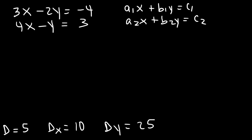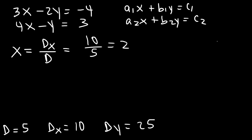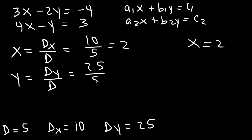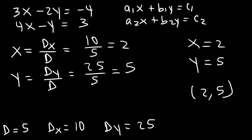Now we can finish the problem. X is dx divided by d, which is 10 divided by 5, equals 2. So x equals 2. Y is dy divided by d, which is 25 divided by 5, equals 5. So y equals 5, giving the solution (2, 5).